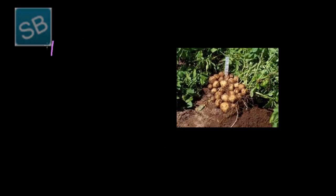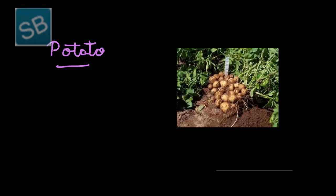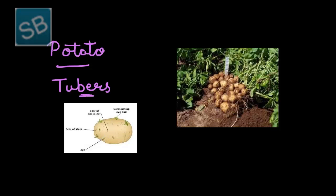Now let us understand another example: potato. In potato, the axils of the underground scaly leaves develop branches. They store food in their apical region, which gradually becomes round or oval. Such a modified stem of potato is known as tubers, used to store food. Buds with scaly leaves occur on the pits of tubers of potato. Such a pit is known as an eye. With the help of these eyes, potatoes carry out the process of vegetative propagation — their reproduction process — which is also a specialized function of stem.